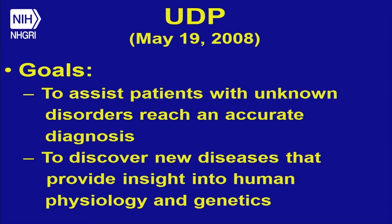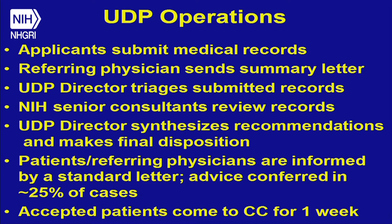The UDP was established to help patients reach a diagnosis, discover new diseases, and because we're the NIH, we have to do some research and science. People apply with their doctor's recommendation and a letter. For adults I look at the records, and for the kids Cindy Tift looks at the records. We give them to intramural consultants around the NIH, and we reject about 75 to 80 percent of patients.